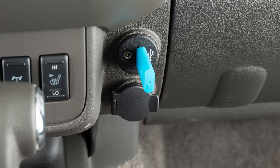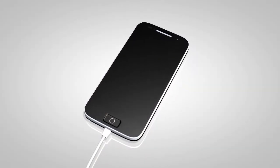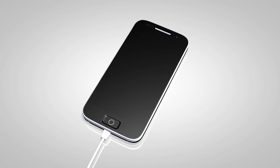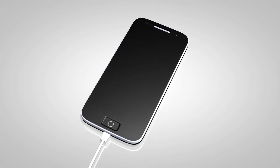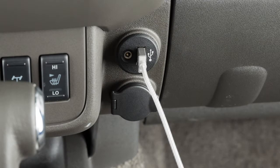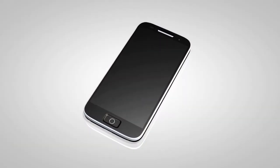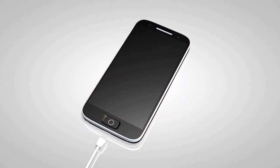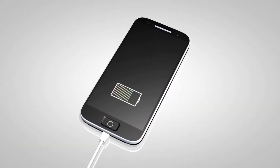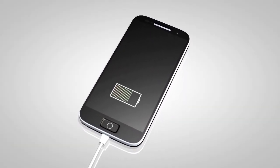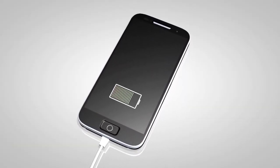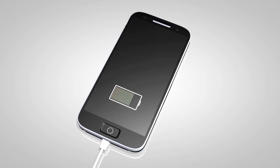To use an iPod with the audio system, connect the cable supplied with your iPod to the USB port, then connect the other end of the cable to your iPod. If compatible, the battery of your iPod will charge while connected to the vehicle.